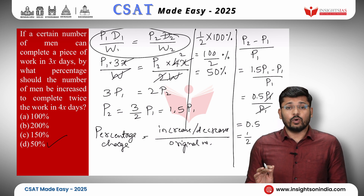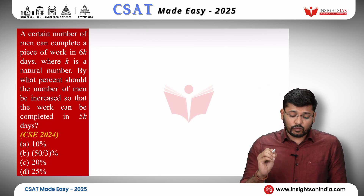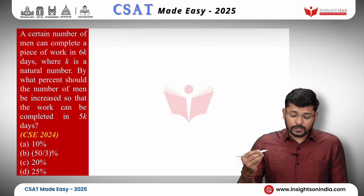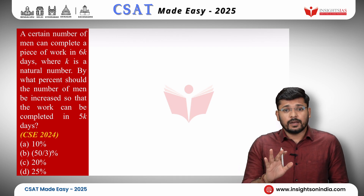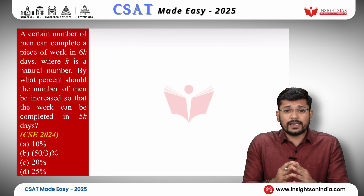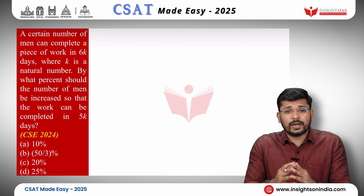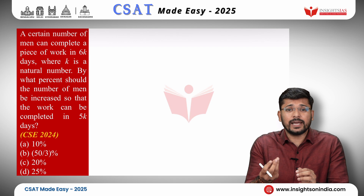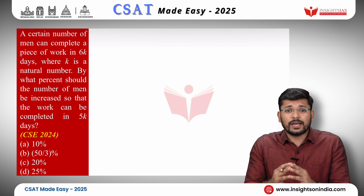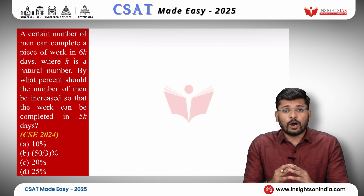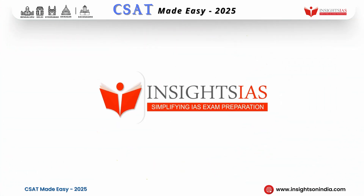It is time for your homework question. A certain number of men can complete a piece of work in 6K days, where K is a natural number. By what percent should the number of men be increased so that the work can be completed in 5K days? Leave your answers in the comment section. If you like these classes and this series, watch our classes regularly — they will be uploaded every evening. These classes are only starters, only tasters. If you like this concept and these questions, join our regular batch for the full course. Thank you and all the best.